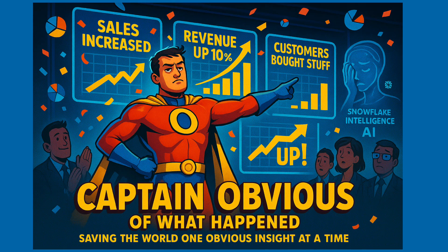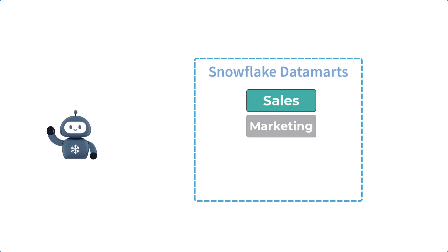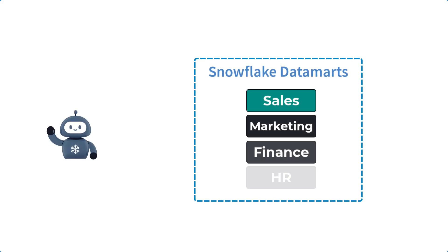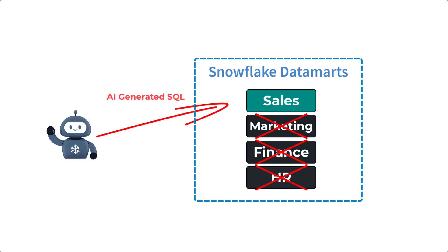Let's get started. Our first segment is called Captain Obvious of What Happened — it is about asking what happened in the past against sales data. This segment is about Snowflake Intelligence having access to different data domains, being able to identify the right domain, and performing advanced SQL queries against a single data domain in Snowflake.